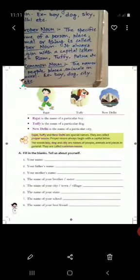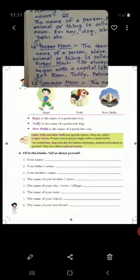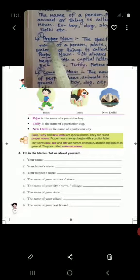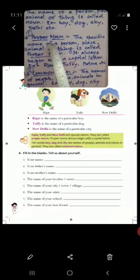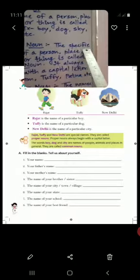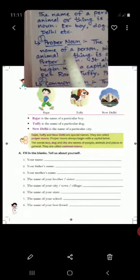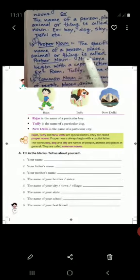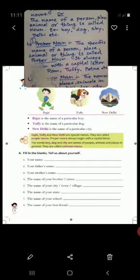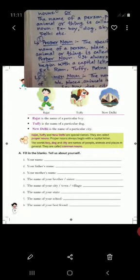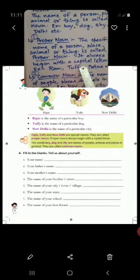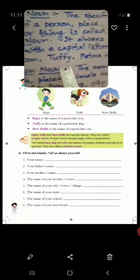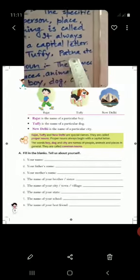We have to learn about two types of noun. So what are they? The first type of noun is proper noun. The definition is the specific name of a person, place, animal or thing is called proper noun. It always begins with a capital letter. For example, Ram, Tuffy, Patna, etc.